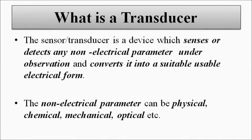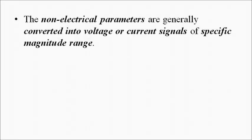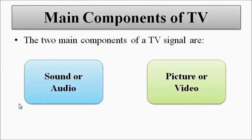Basically, what a transducer does is it performs signal conversion — energy conversion. It converts non-electrical parameters into a suitable electrical form. A non-electrical parameter can be of a physical, chemical, optical, mechanical, or biological nature, and it converts it into usable electrical form — meaning voltage and current of suitable levels and ranges. The main components in television are the sound section and the video section, so separate transducers are required for the energy conversion of sound and video.